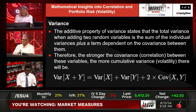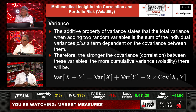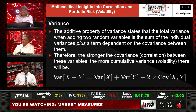Variance. The additive property of variance states that the total variance when adding two random variables is the sum of the individual variances plus a term dependent on the covariance between the two. Therefore, the stronger the covariance correlation between these variables, the more cumulative variance and volatility there will be. This is one of the fundamental concepts of probability and statistics — the total variance is not just the sum of individual variances, but the sum of individual variances plus the covariance term. Covariance, in simple words, means the correlation, which can be negative, positive, or zero.